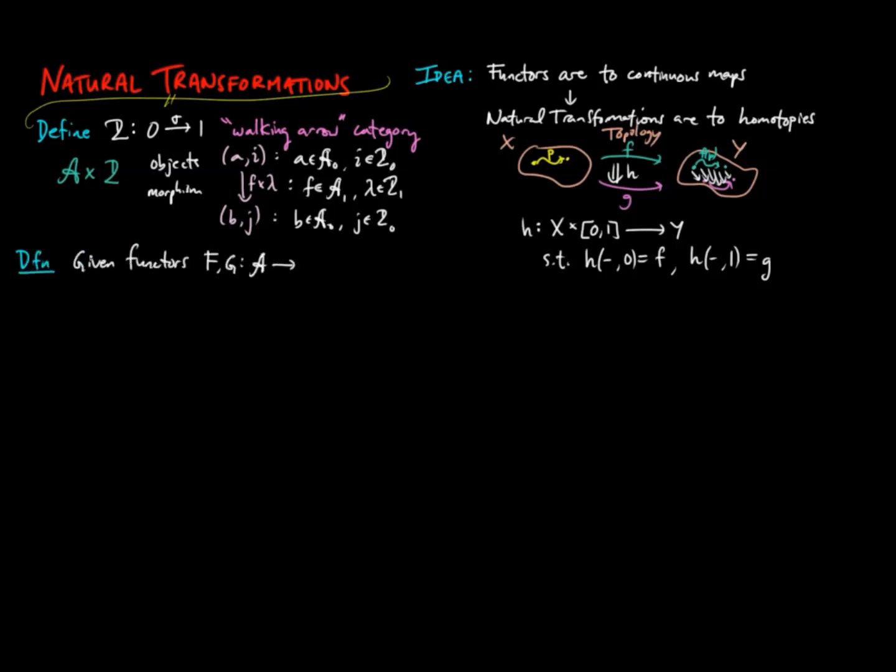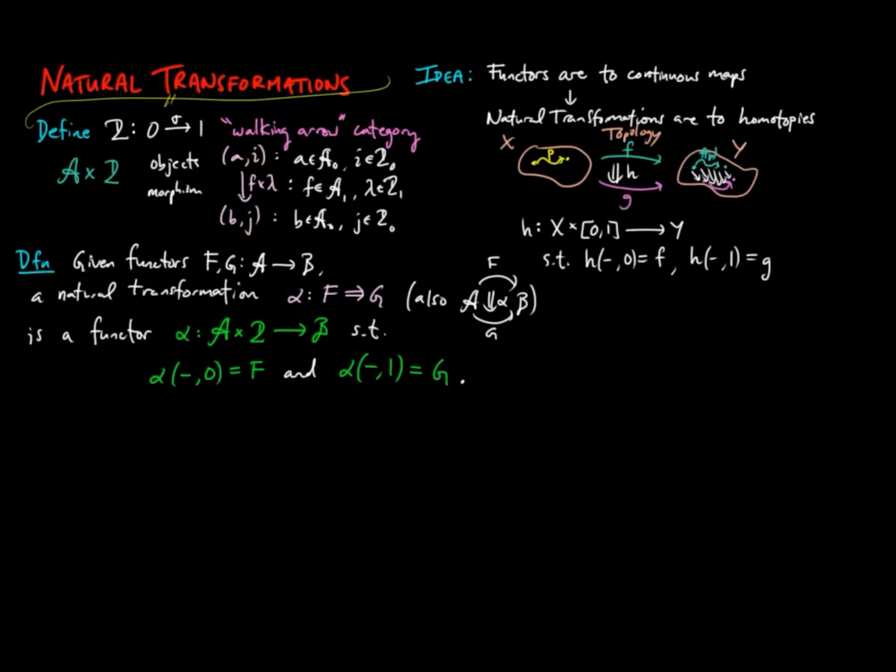Given functors F and G from category A to category B, a natural transformation, alpha, from F to G, also written as a 2-cell here, is a functor alpha from A cross 2 to B, such that alpha on 0 is F and alpha on 1 is G. So this completes the analogy we gave with homotopies. The diagram above between topological spaces becomes the following diagram between categories.